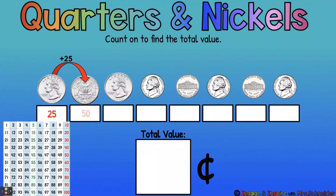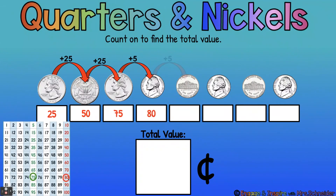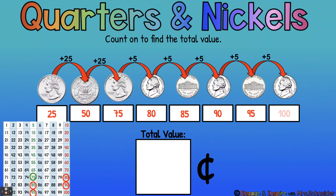Let's count our quarters: 25, 50, 75. One quarter is 25, two quarters is 50, three quarters is 75 cents. Put 75 on our hundreds chart. Now count by fives — we're going to zigzag back and forth between the five column and the tens column. 75, 80, 85, 90, 95, 100. This equals 100 cents because we had three quarters — 75 cents — plus five nickels, which is 25 cents, the same as one more quarter.